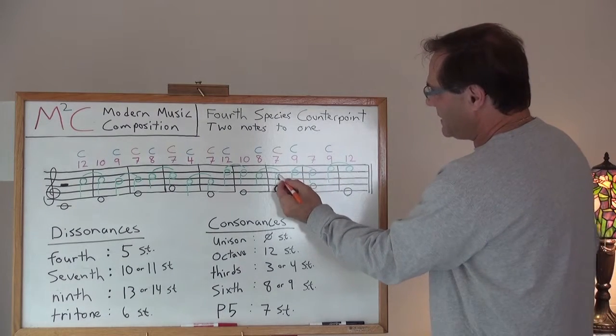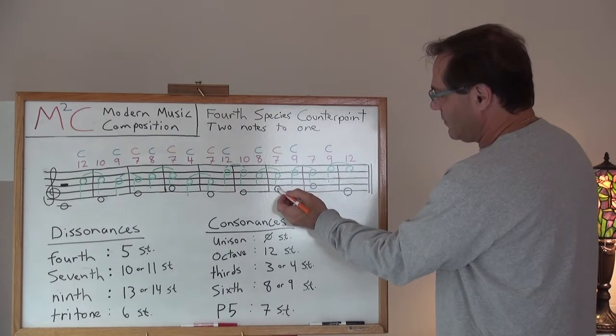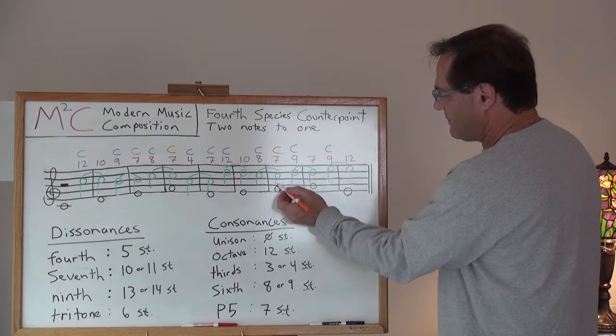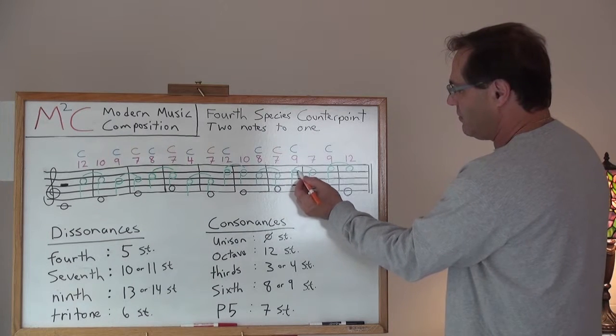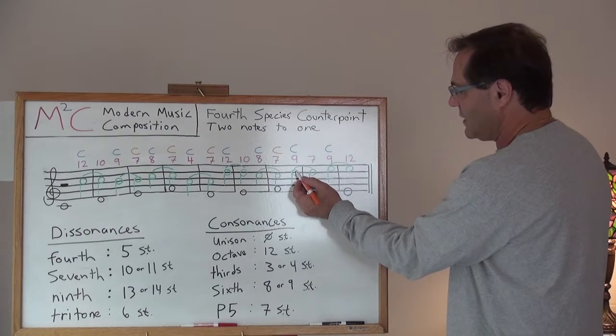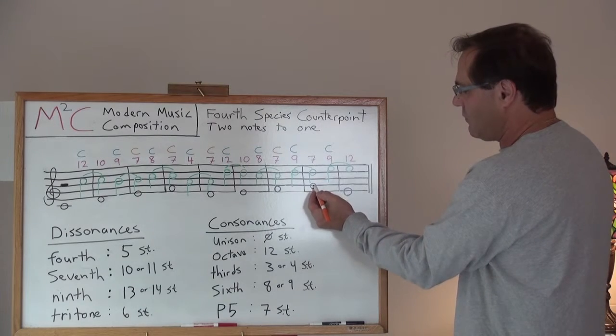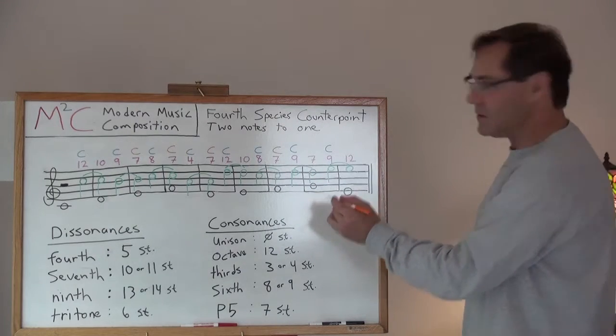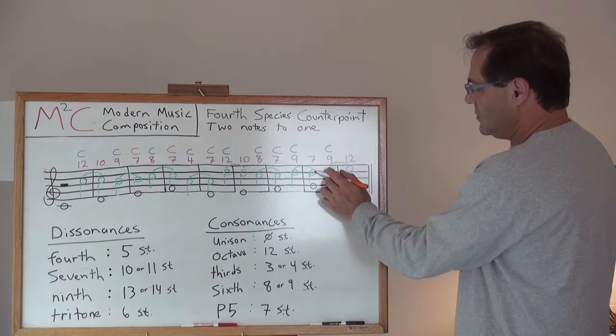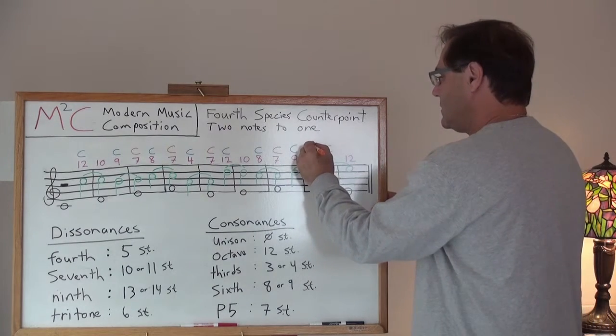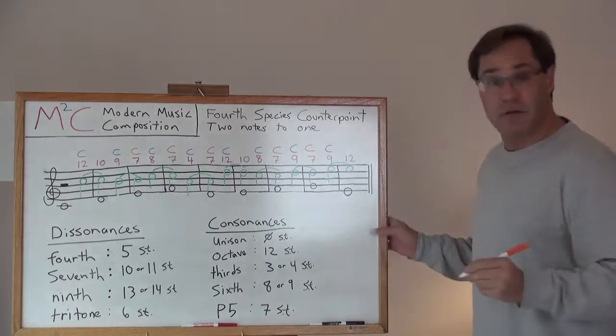All right. So now I take that interval, in which I have an F to a C, and I'll bring that C up to a D, suspend that D over, and lo and behold, a G to a D is yet another perfect fifth.